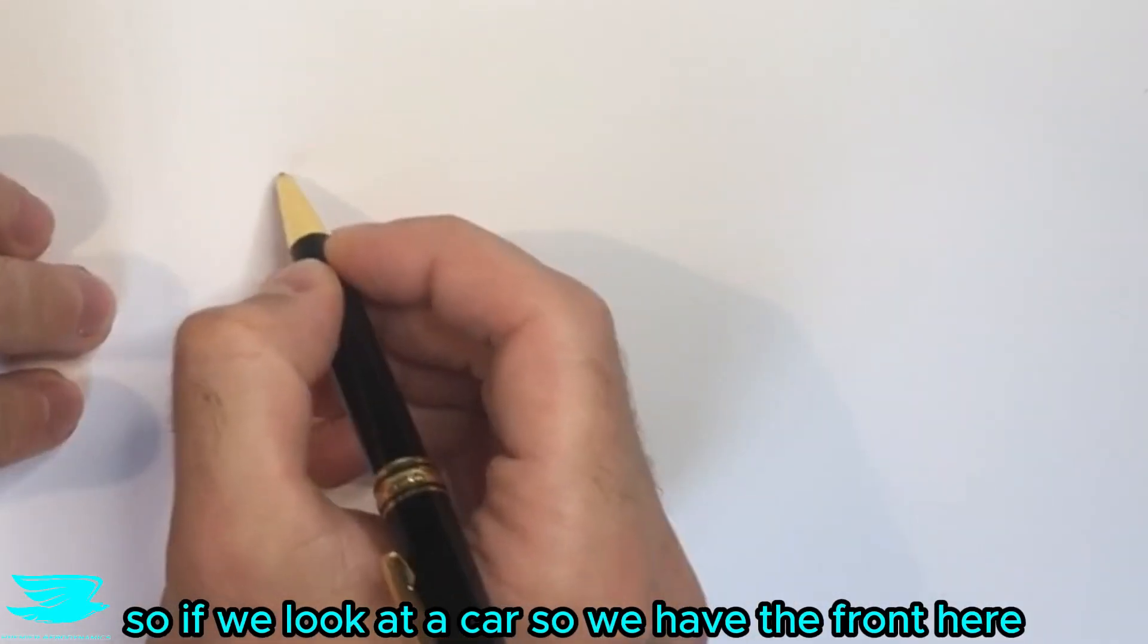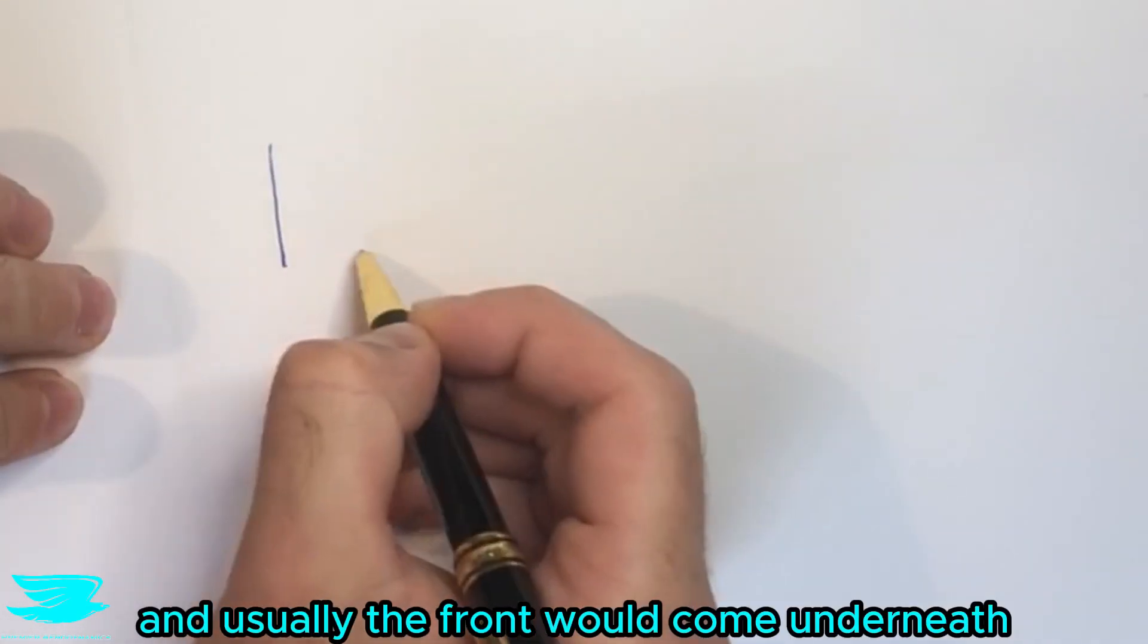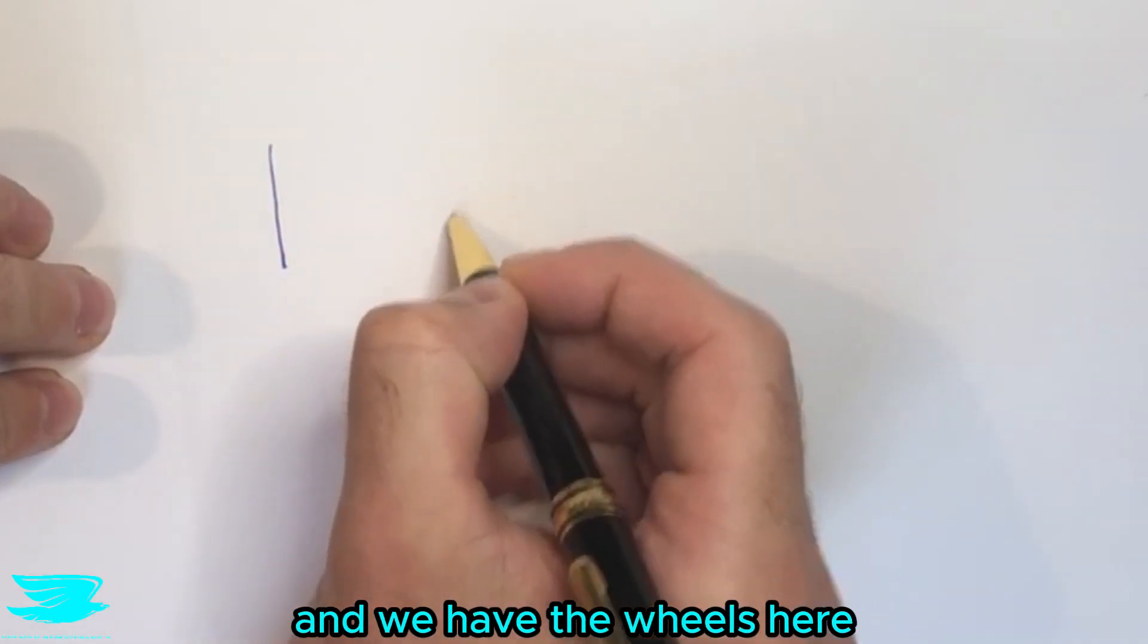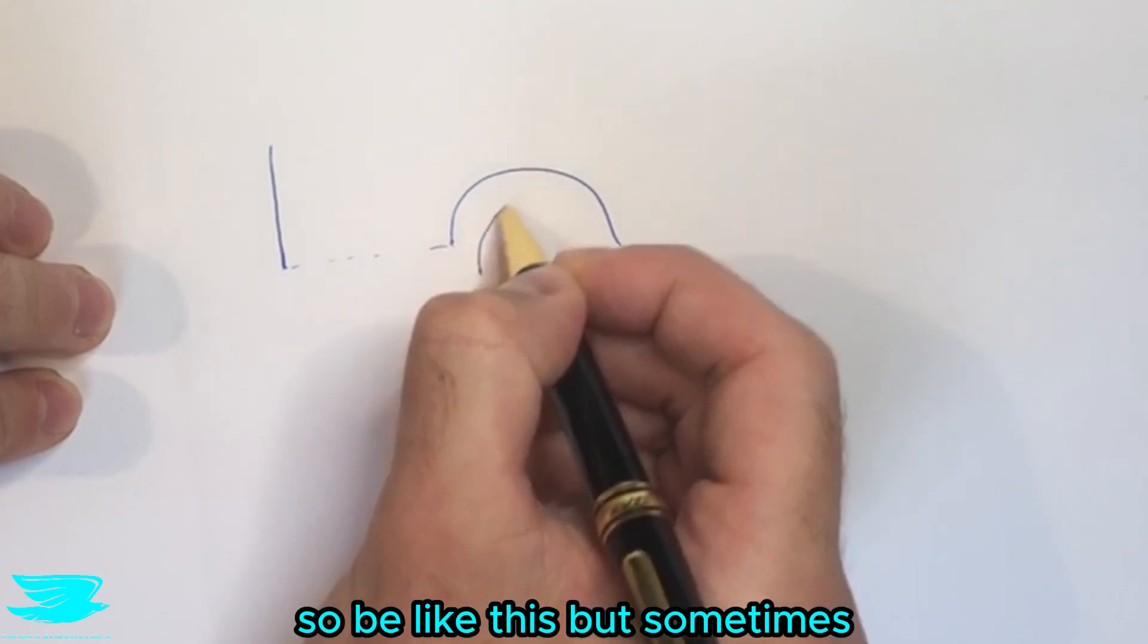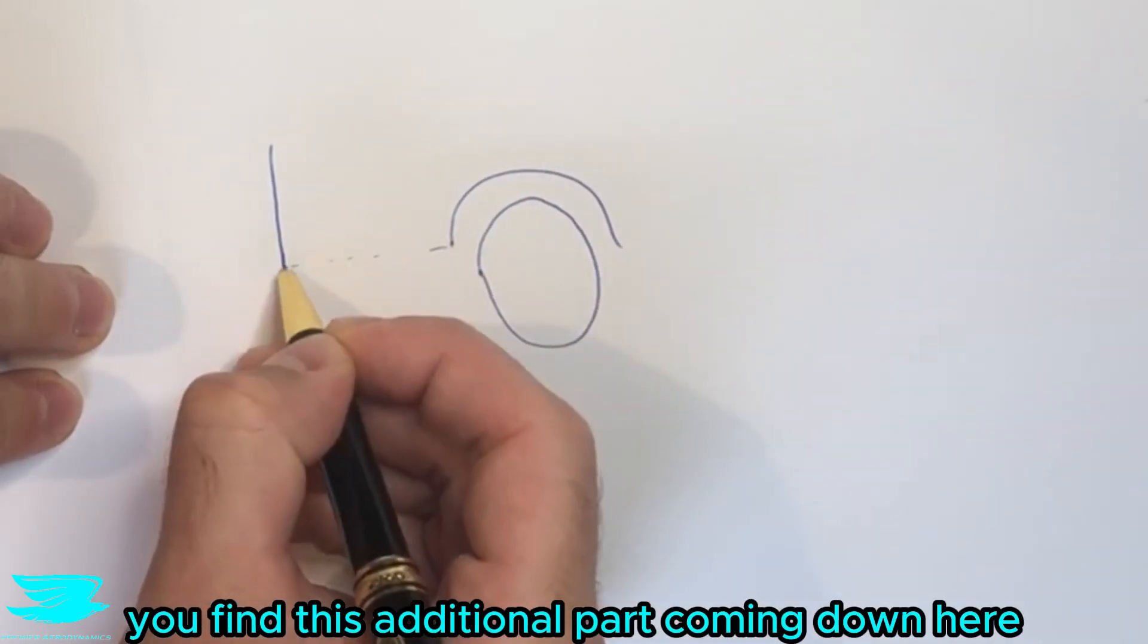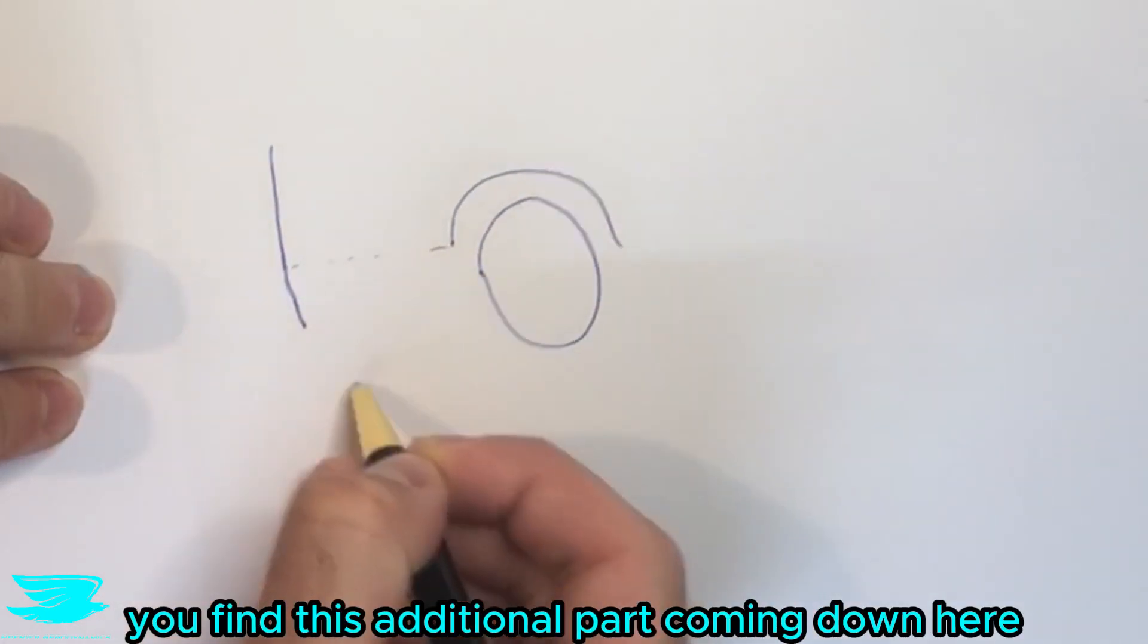So if we look at a car, let's say we have the front here and usually the front would come underneath and we have the wheels here. So it'd be like this. But sometimes you'll find this additional part coming down here. So if this is the road here,